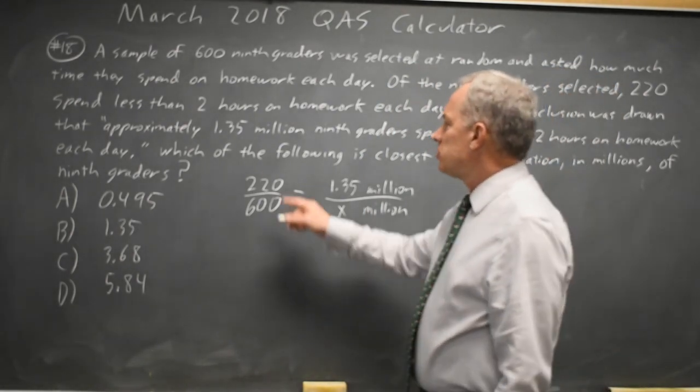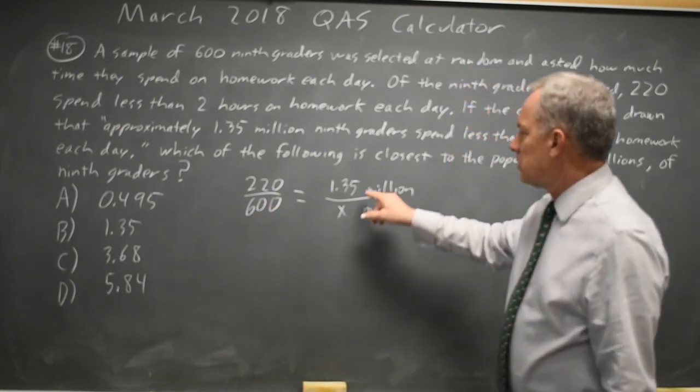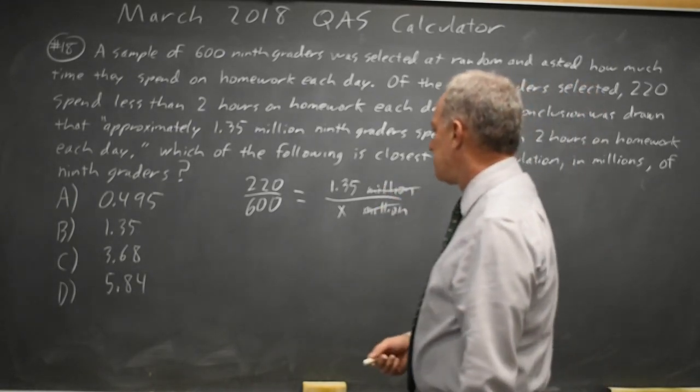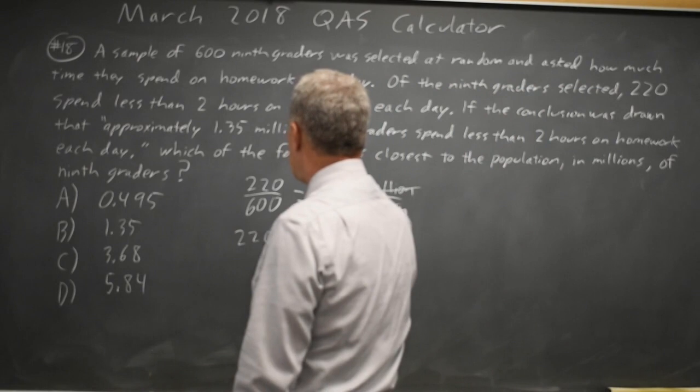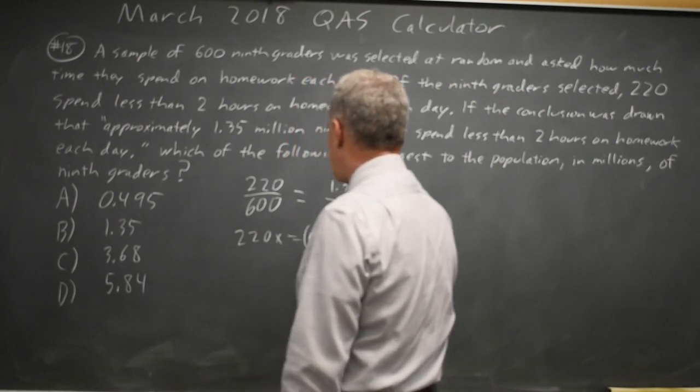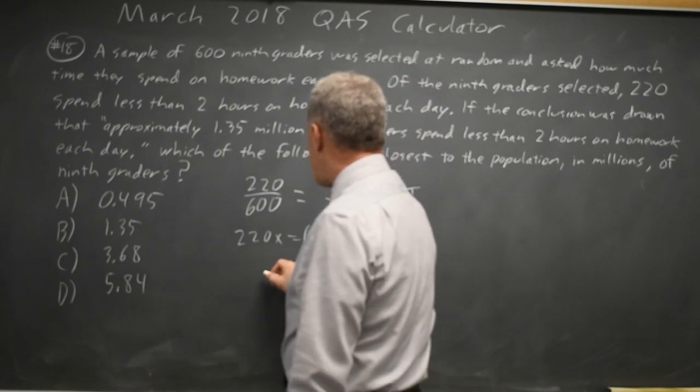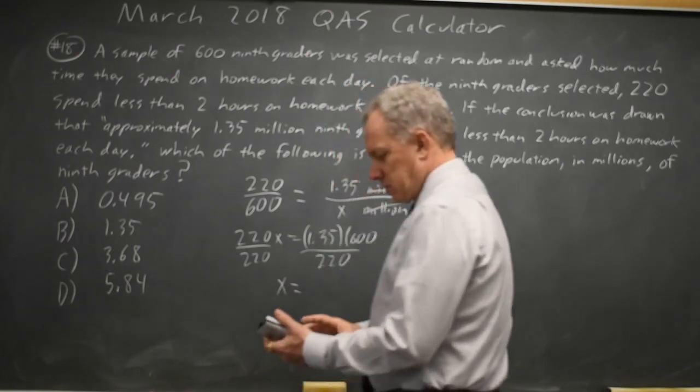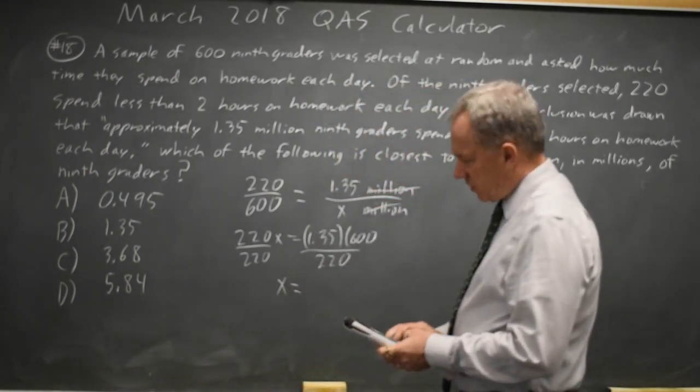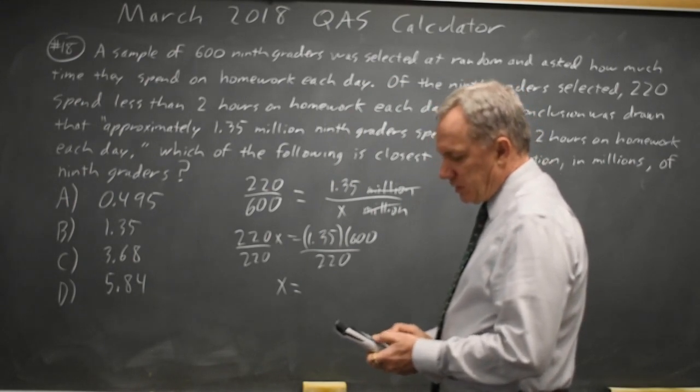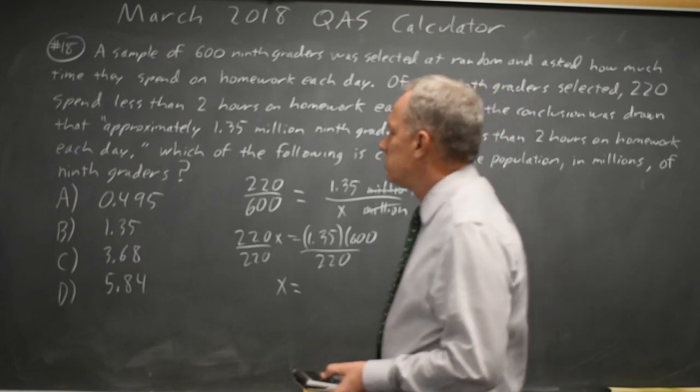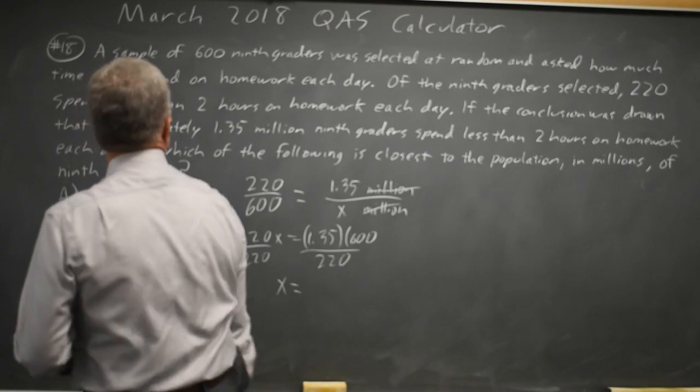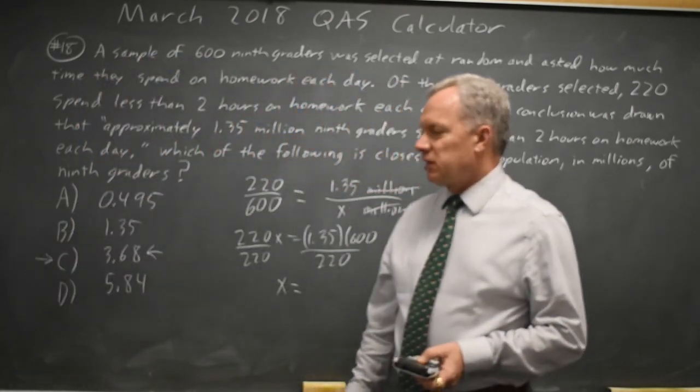So if I set up the proportion, 220 out of 600 spend less than 2 hours, 1.35 million out of X million spend less. I'm going to drop the millions because it's an abstraction and I'll cross multiply. So 220X equals 1.35 times 600. 220X equals 1.35 times 600 over 220 is 3.68. So the population of millions of 9th graders in whatever region they're referring to is 3.68.